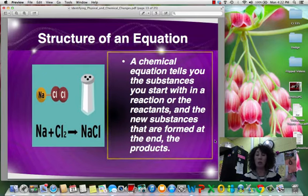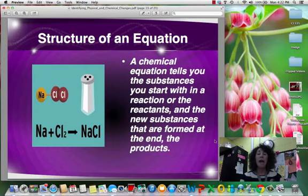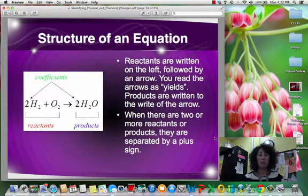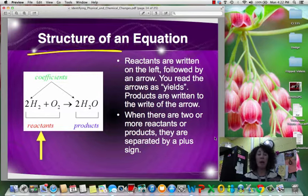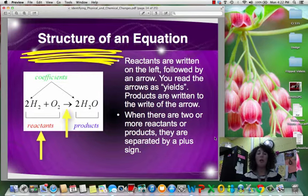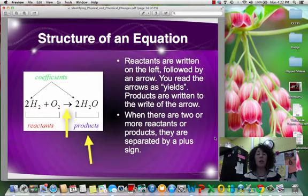Now, what the chemical equation tells you is that the substance that we are starting out with in the reaction, which are called the reactants, and the new substances that are being formed at the end, which are the products. So it shows us exactly what's happening and the ratios of what we need. Reactants are always written on the left. Then we have an arrow, which means yields. And the products are written to the right of the arrow.